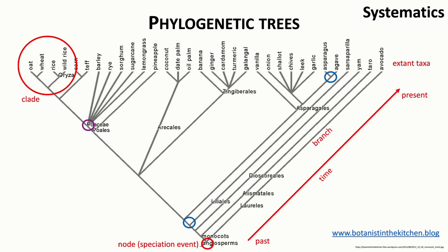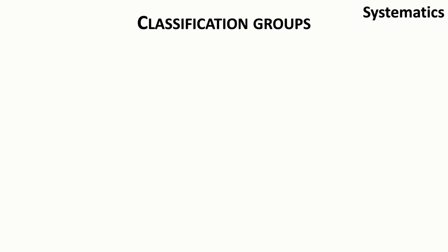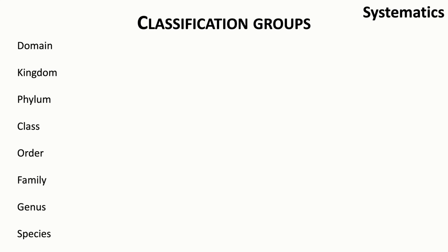Knowing how to read phylogenetic trees is an important skill for understanding evolutionary relationships and biodiversity — we come across trees not infrequently in everyday life, for example in reporting about the evolution of viruses like COVID. From the relationships depicted on such trees, we can classify plants according to different hierarchical levels, each representing a clade. These hierarchical levels, from most specific to broadest, are: species, genus, family, order, class, phylum, kingdom, and domain. Every plant is assigned to a group at each level.